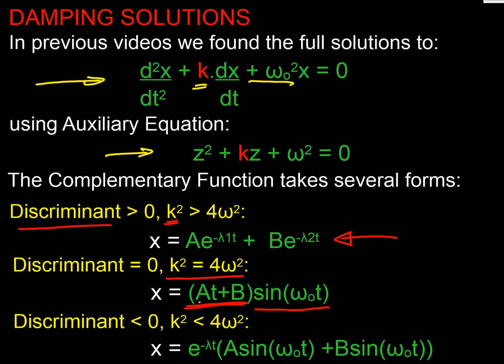And finally, if my discriminant was less than 0, I get a complex solution because K² is less than 4ω². And what do I get? Well, I get some sort of exponential decay term, and then I get some sort of sine wave vibration going on there.